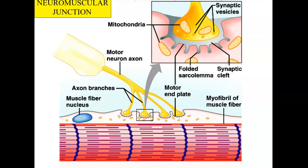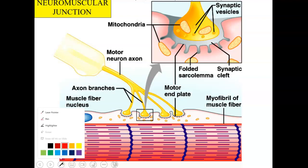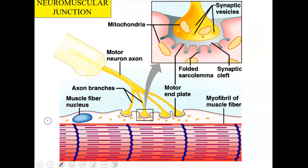Today we're picking up with part two of our introduction to the muscular system. We talked a little bit about the neuromuscular junction in the last video, so we'll pick back up with that. You can see that you have your motor neuron axon, and it is going to attach to this muscle. Notice how when it attaches, it's not actually going to be touching it.